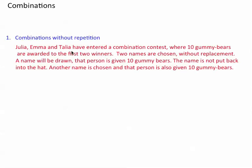Here's an example. Julia, Emma, and Talia have entered a combination contest where ten gummy bears are awarded to the first two winners. Two names are chosen without replacement. You get ten gummy bears if you're chosen first, you get ten gummy bears if you're chosen second. It doesn't matter whether you're chosen first or second. So in this case, order does not matter.